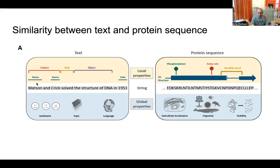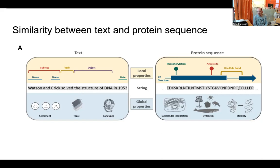These properties can in both cases be local — selected words or letters next to each other are related — but also global. For example, the number of words of a certain type can tell something about a topic. Similarly, if you have a lot of hydrophobic amino acids, it's likely a membrane protein. So there is information that can be both local and global.